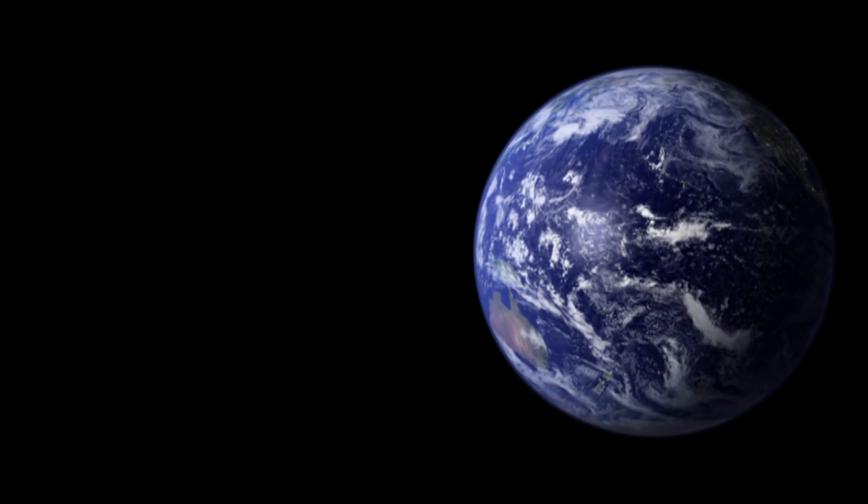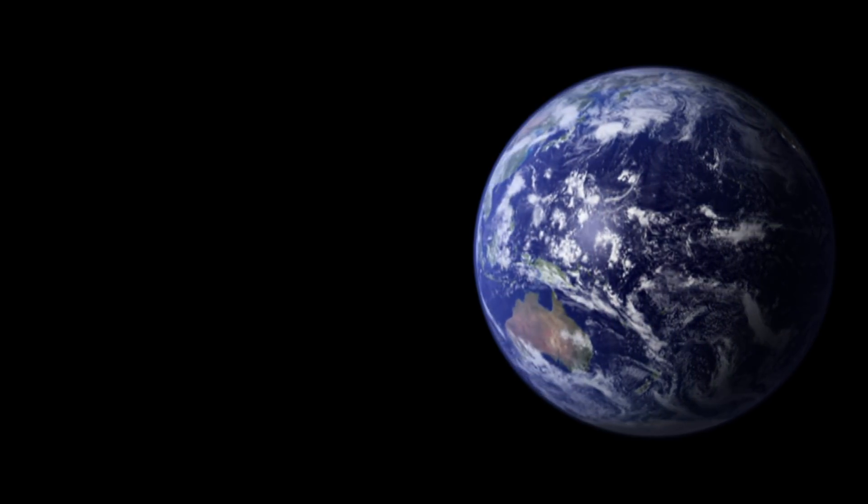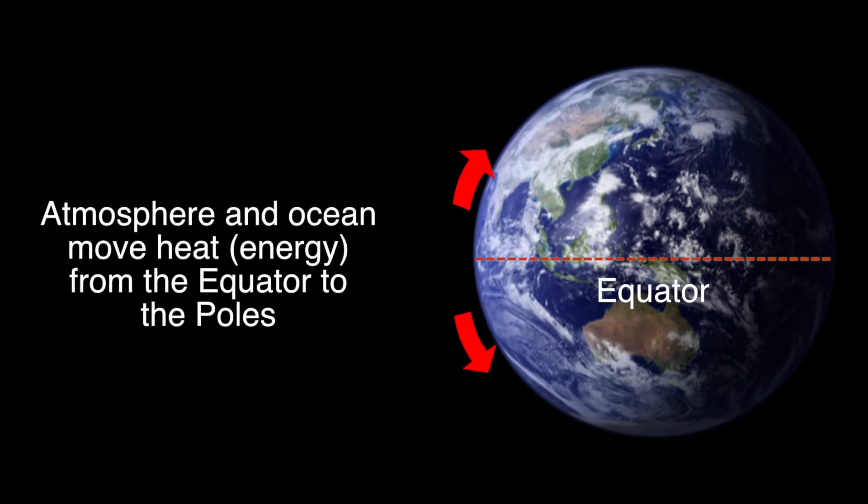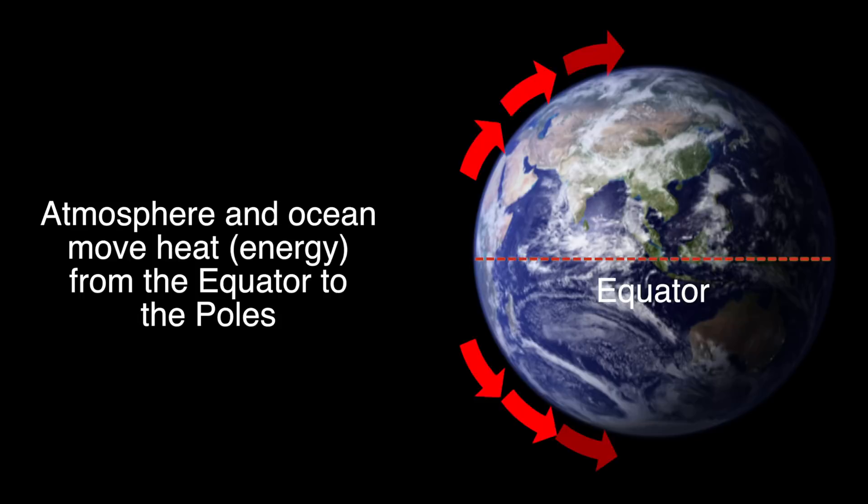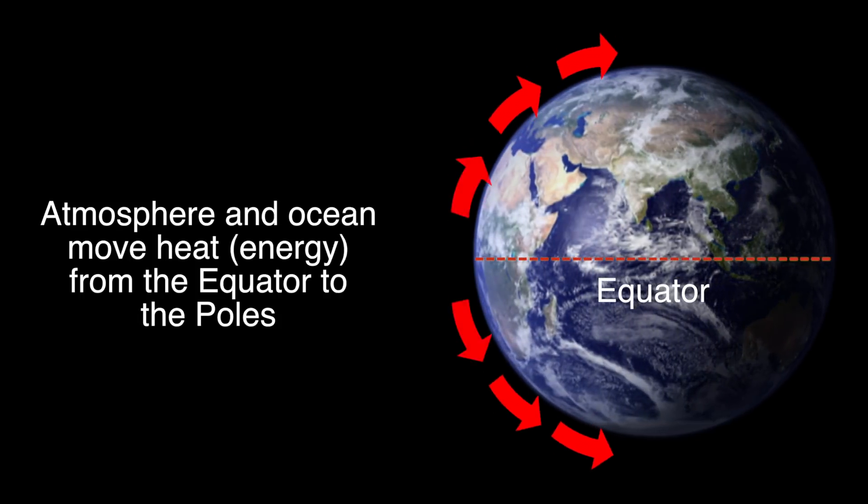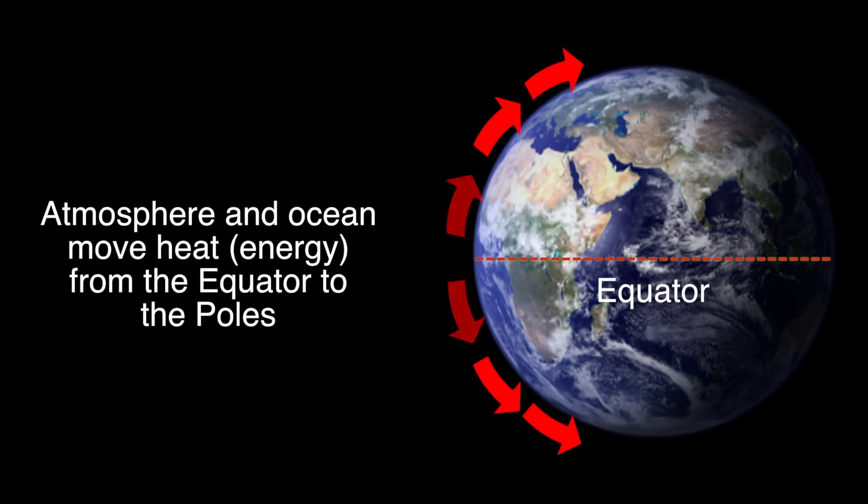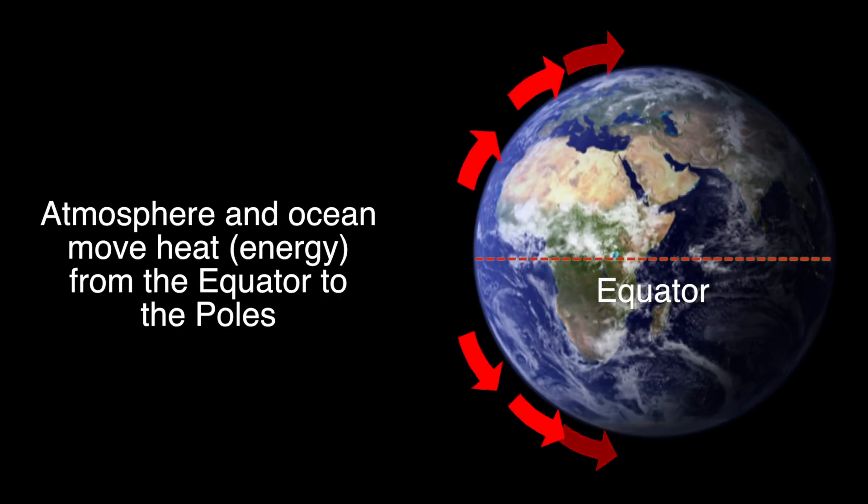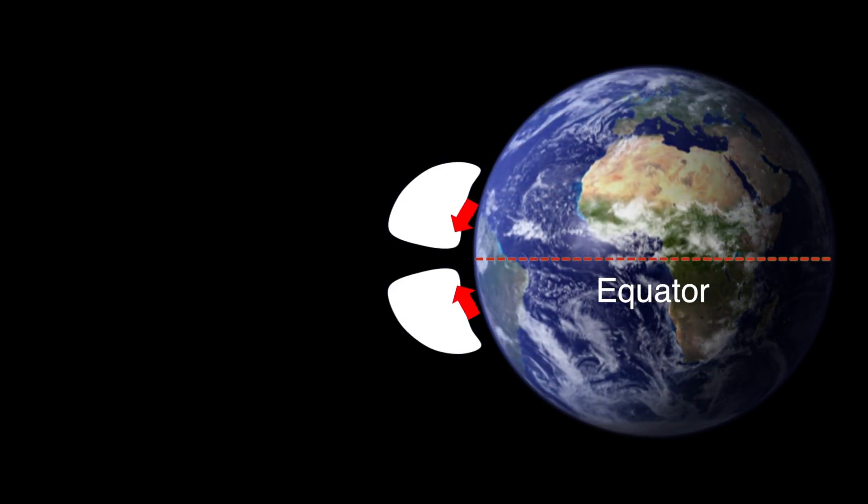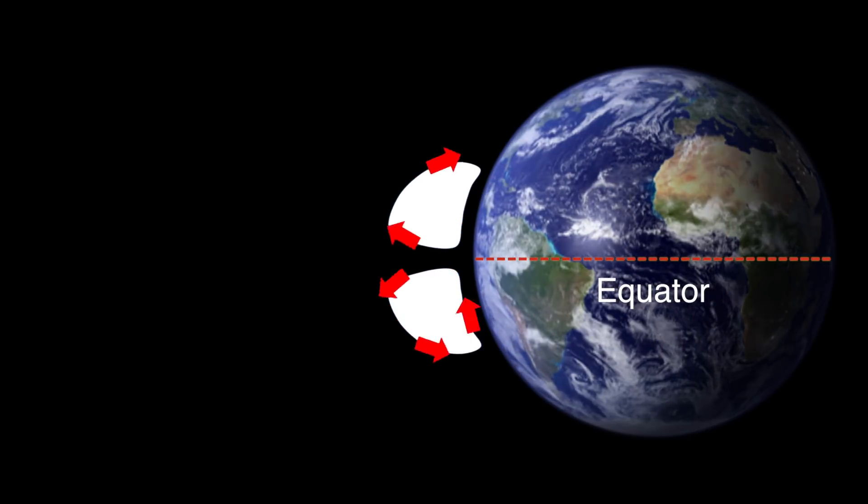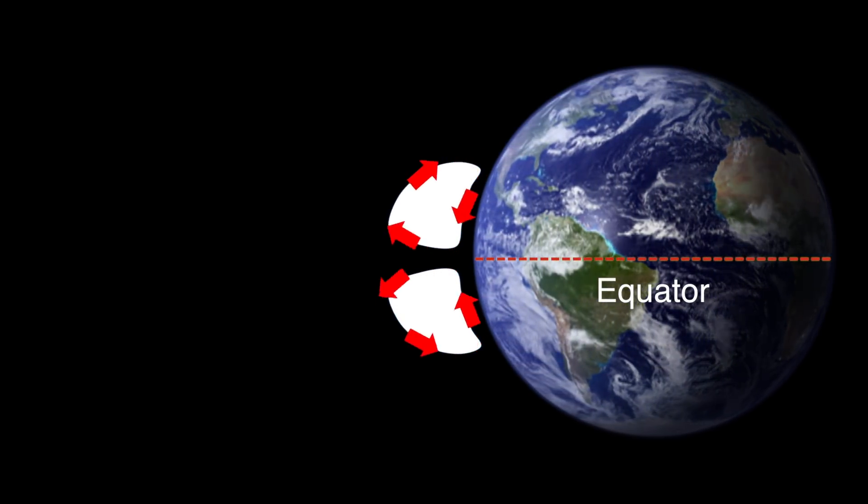The Earth doesn't like to have one part of it so much hotter than other parts, so it tries to even them out. The atmosphere and ocean transport a lot of the extra heat energy from the equator regions to the polar regions. Not enough to make them the same temperature, but enough to make the temperature difference a lot smaller. This redistribution of energy creates the atmospheric circulation, or movement of air, that helps give different places different climates.